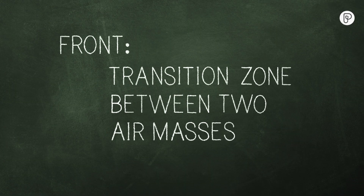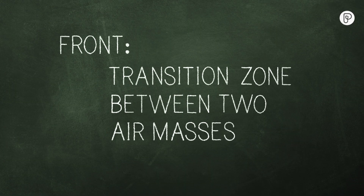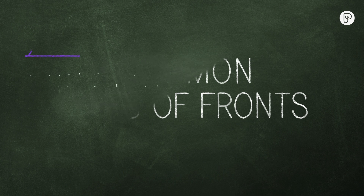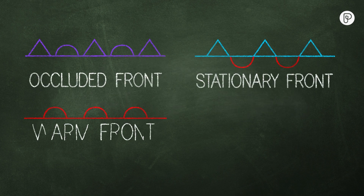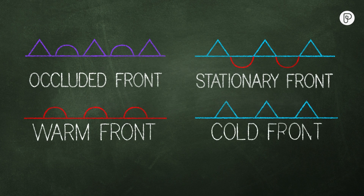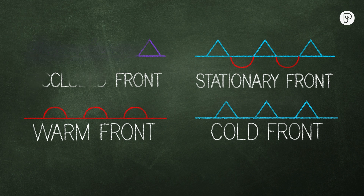In the simplest form, a front is a transition zone between two air masses. There are four common types of fronts: occluded, stationary, warm, and cold.